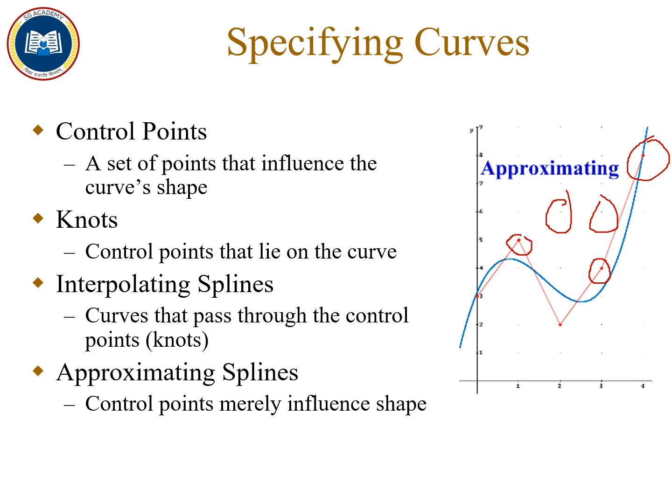Interpolating splines वो splines होते हैं जिनके through से हमारा curve पास होता है। जैसे कि अगर आप इस example में देखें, तो यहाँ पर ये पहला point और ये last point — यहाँ पर हमारे curve इन दोनों points से पास हो रहा है, इसलिए हम इसे Interpolating splines बोलेंगे। Last होता है approximating splines। Approximating splines वो points होते हैं जो कि सिर्फ हमारे curve की shape को influence करते हैं, लेकिन हमारा curve उन points से पास नहीं होता है — this point can influence our curve in shape but our curve does not pass through it, so we call it approximating splines.